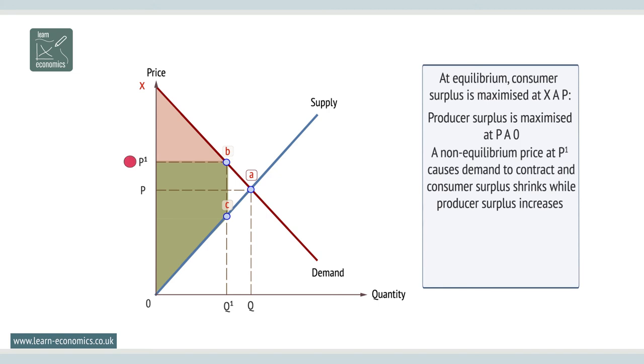A non-equilibrium price at P1 causes demand to contract and consumer surplus to shrink while producer surplus increases. However, there is a net welfare loss of area BAC. Here, surplus shrinks.